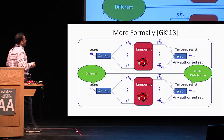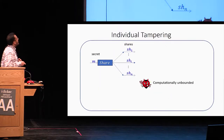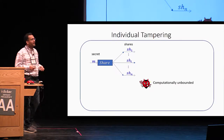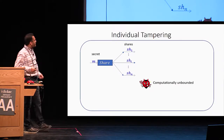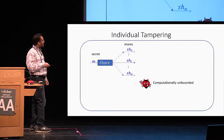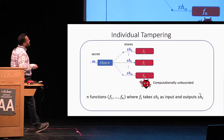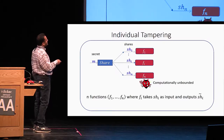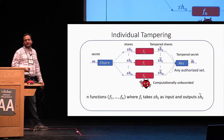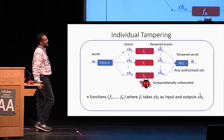Let me talk about how this tampering is done. One could consider various tampering models. The most natural and probably simplest is the individual tampering model. Here, the adversary tampers with each of these shares individually — represented by n functions f1 to fn, where function fi takes share i as input and outputs a tampered version of share i. These n functions act independently on the n shares, and finally we have the tampered secret.